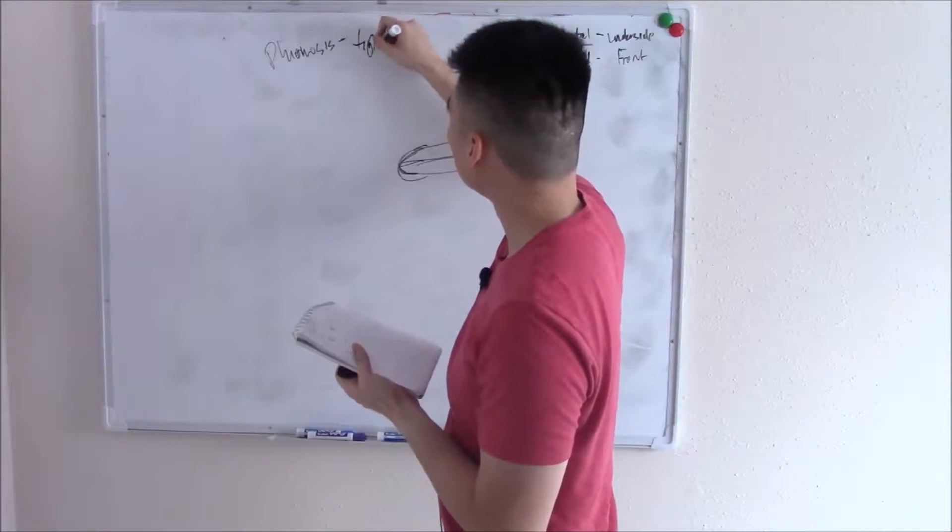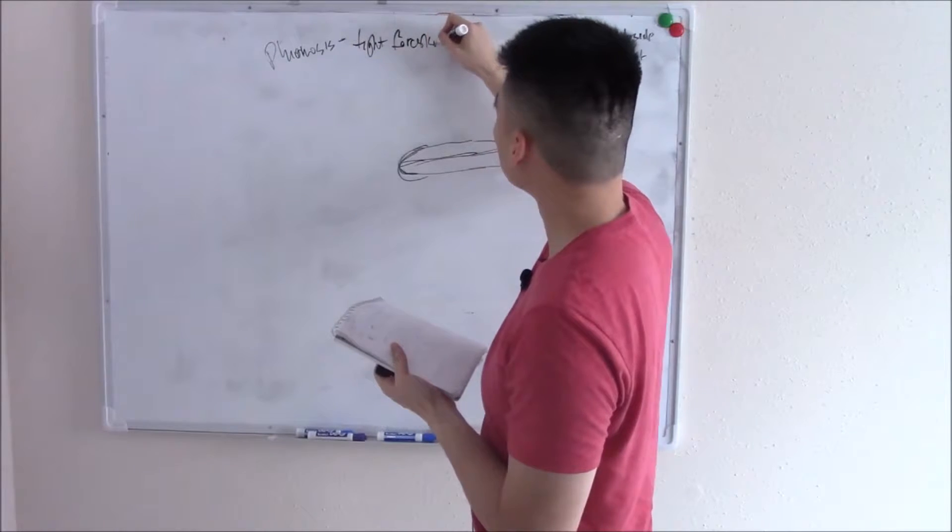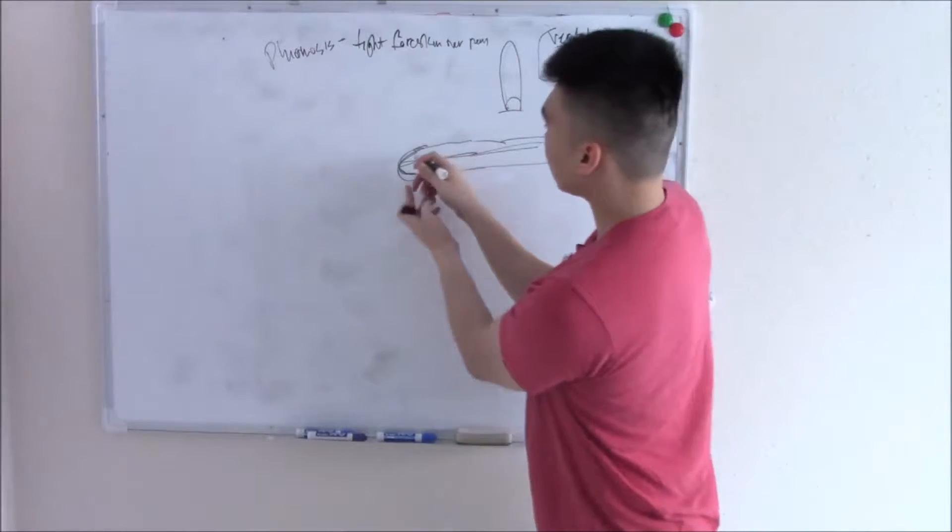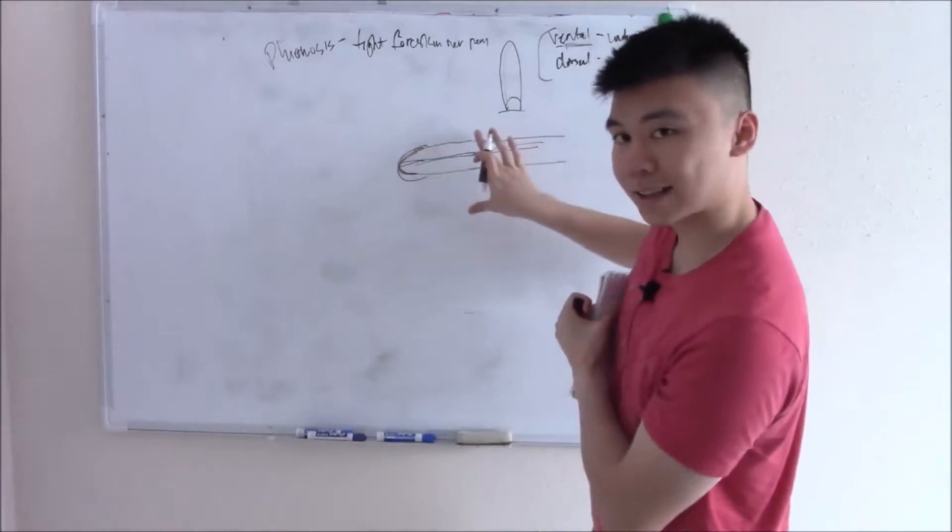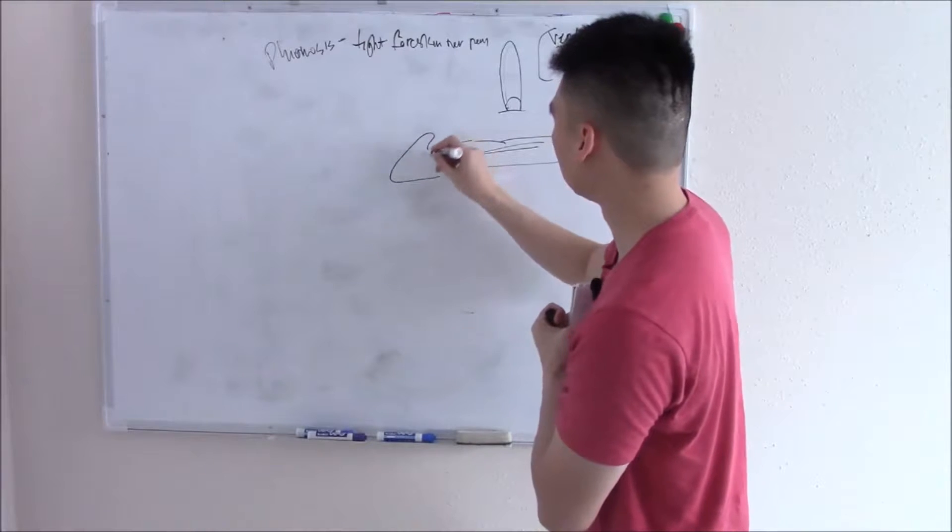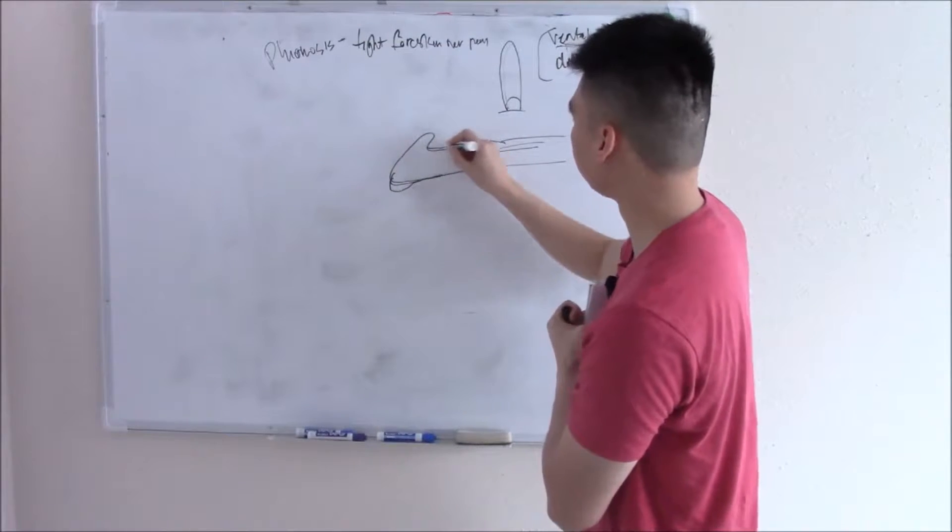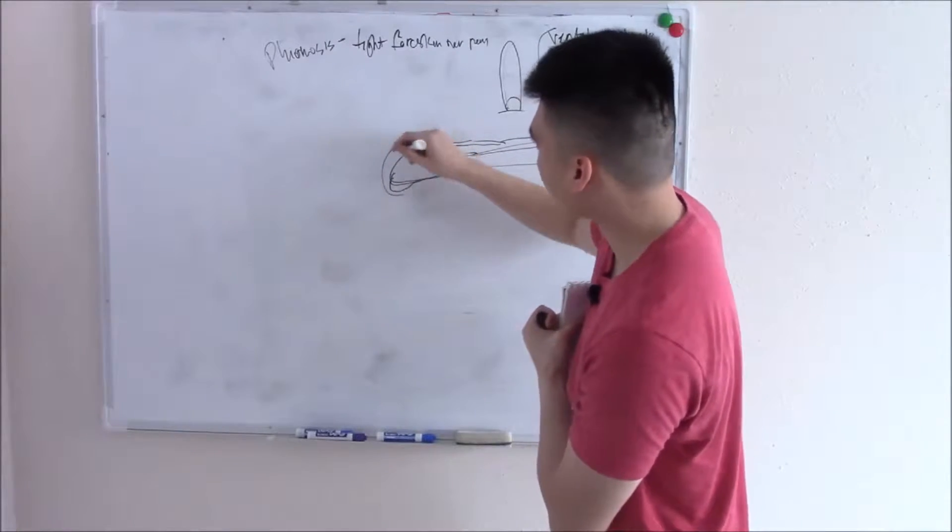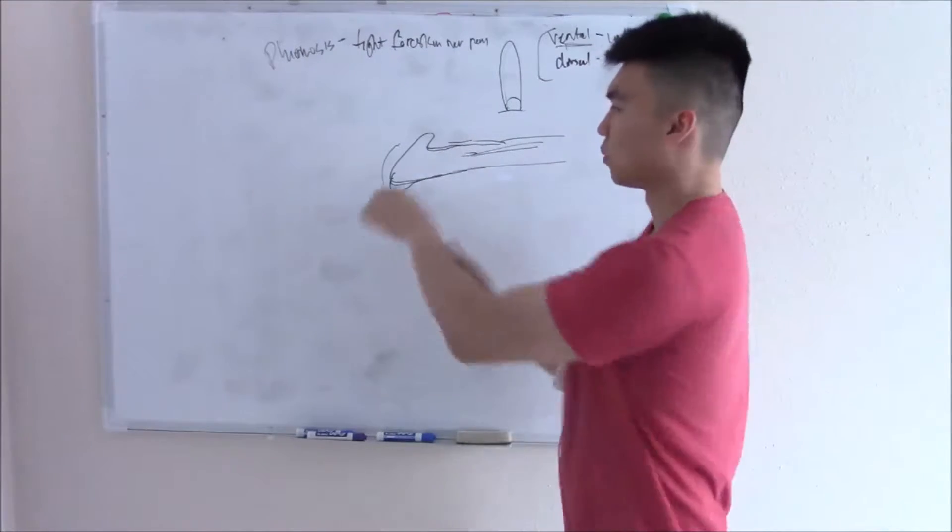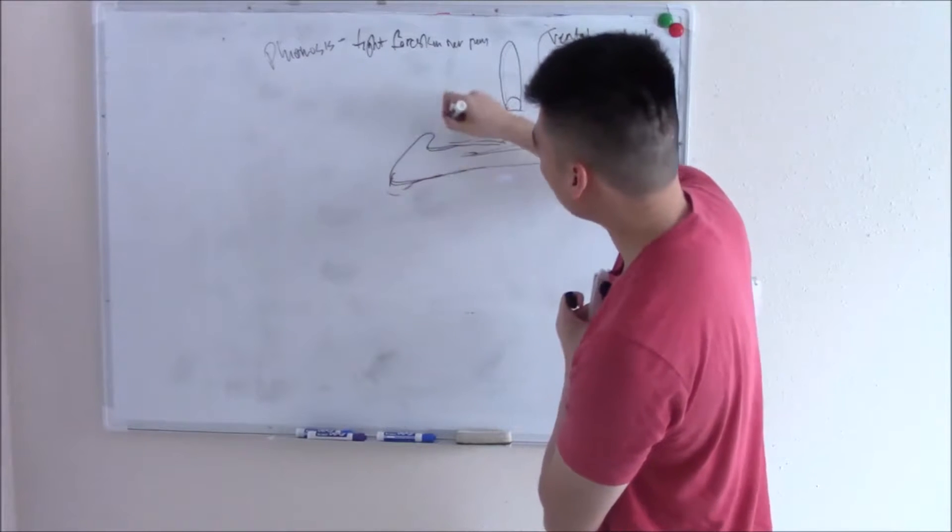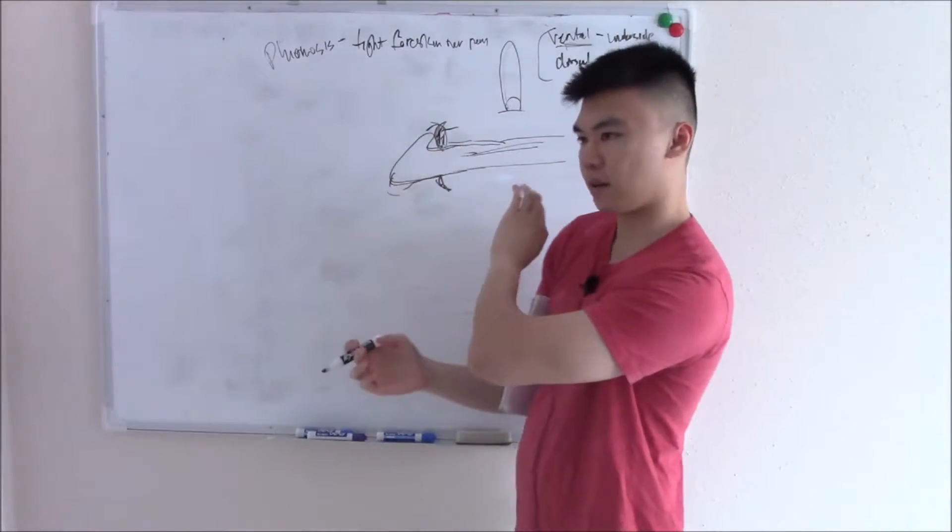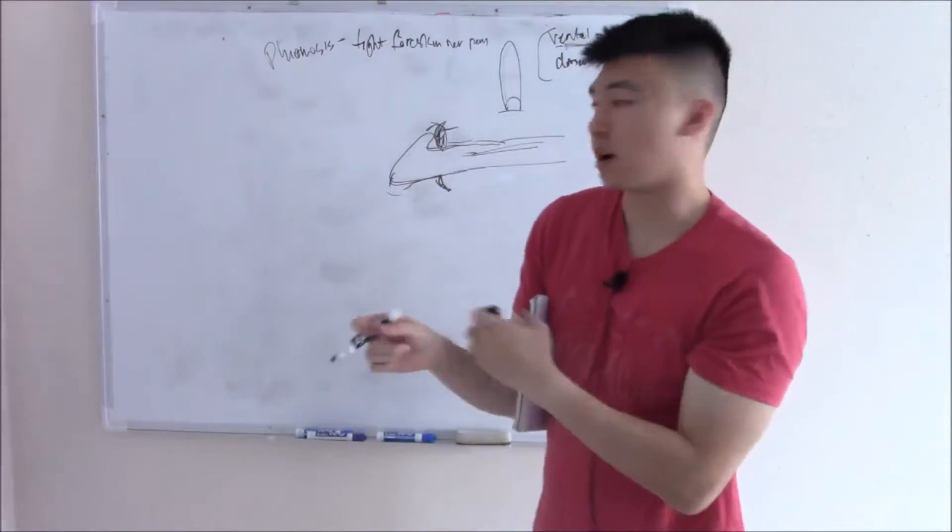So phimosis is tight foreskin over a penis. A lot of times not a problem, usually self-resolved. But sometimes if you take that tight foreskin and you pull it back then it can get trapped. Let me draw this penis a little bit more anatomically correct. So you have really tight foreskin coming over the top. If you pull that skin back for whatever reason, if you're showering, if you're having an erection, or you're going to the doctor and they're doing a physical exam and pull it back, you pull that skin back and it can get trapped underneath the glans penis and it can't go back.